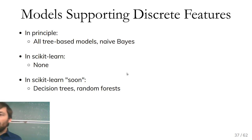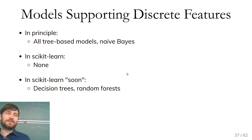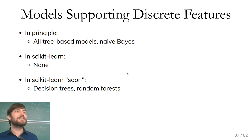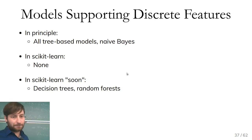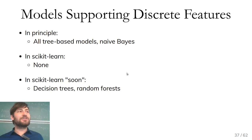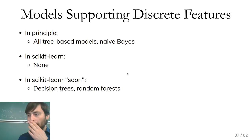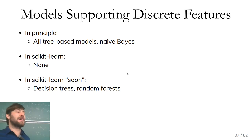In principle all tree-based models can directly use discrete features, and some variants of Naive Bayes can too. Unfortunately in scikit-learn this is not yet implemented for trees, so even with tree models you currently have to use one-hot encoding. Hopefully this is going to change soon — it's been planned for several years and may actually change in 2019.